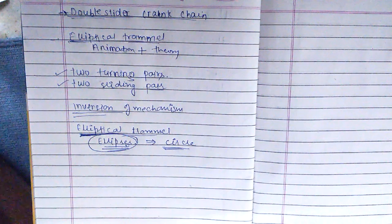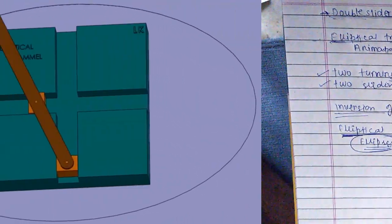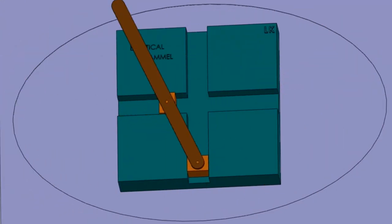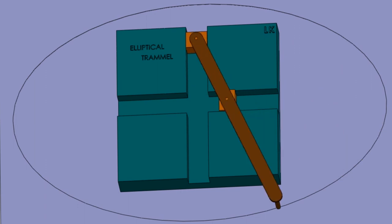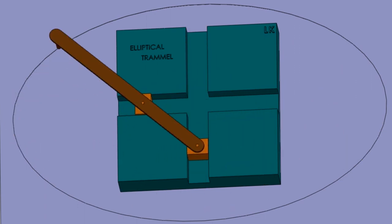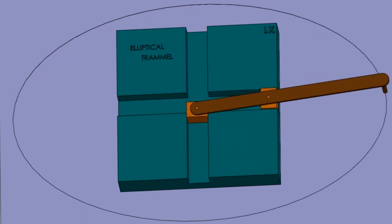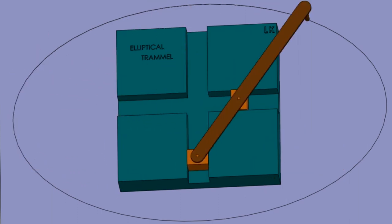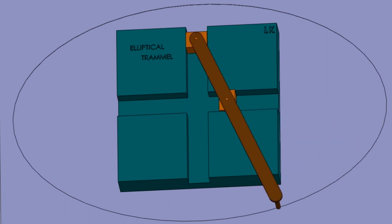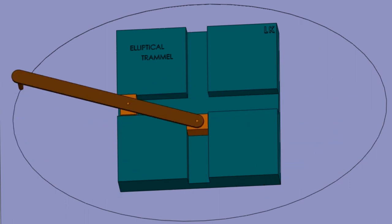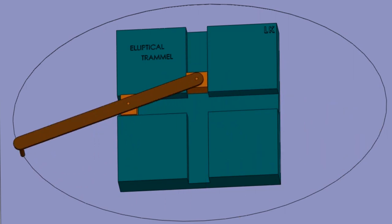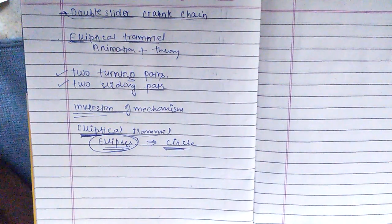First let's see its animation and then we'll draw its diagram. This is the animation of the elliptical trammel. We can see how it rotates inside the groove cuts and groove areas, forming an ellipse. The slide is moving inside the case or slotted plate.